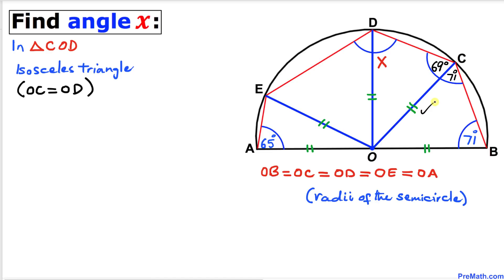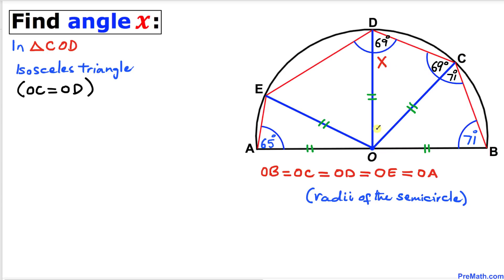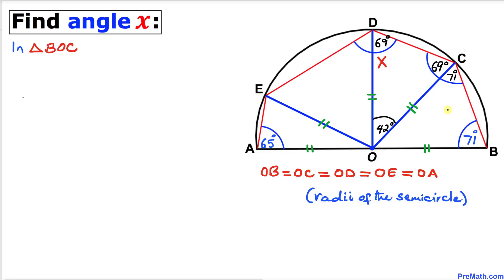Now let's focus on triangle COD. This is also an isosceles triangle since OC equals OD. Therefore both base angles are equal; since one is 69 degrees, the other is 69 degrees as well. The sum of all angles in the triangle equals 180 degrees, so the third angle is 42 degrees: 69 + 69 + 42 = 180 degrees.